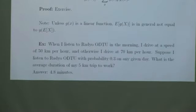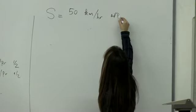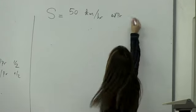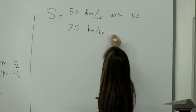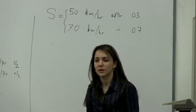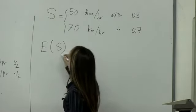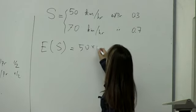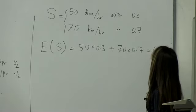What is my expected speed? Let S be my speed — it's a discrete random variable. S is 50 km/h with probability 0.3, and S is 70 km/h with probability 0.7. Expected speed is 50 times 0.3 plus 70 times 0.7: that's 15 plus 49, equals 64 kilometers per hour.